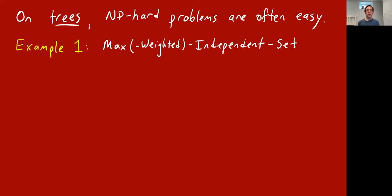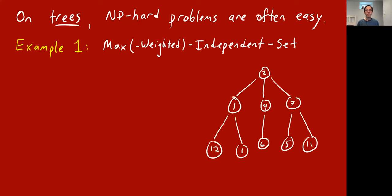Let's consider again this problem called the max independent set. We're trying to find a subset of vertices in a graph that's an independent set, meaning there are no edges with both endpoints in the set you've chosen. To make it a little spicier, we can imagine the weighted version where the nodes have weights, so we're trying to take the largest weight independent set.